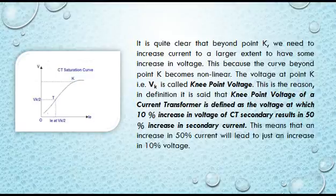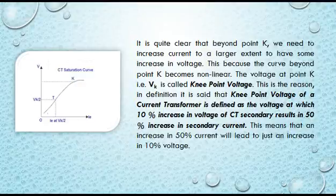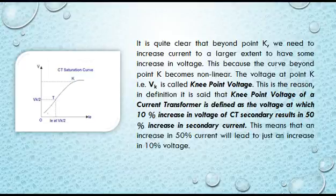By IEC definition, the knee point voltage of a current transformer is defined as the voltage at which a 10% increase in CT secondary voltage results in a 50% increase in secondary current. In other words, beyond point K, an increase of 50% in current will lead to just a 10% increase in voltage.